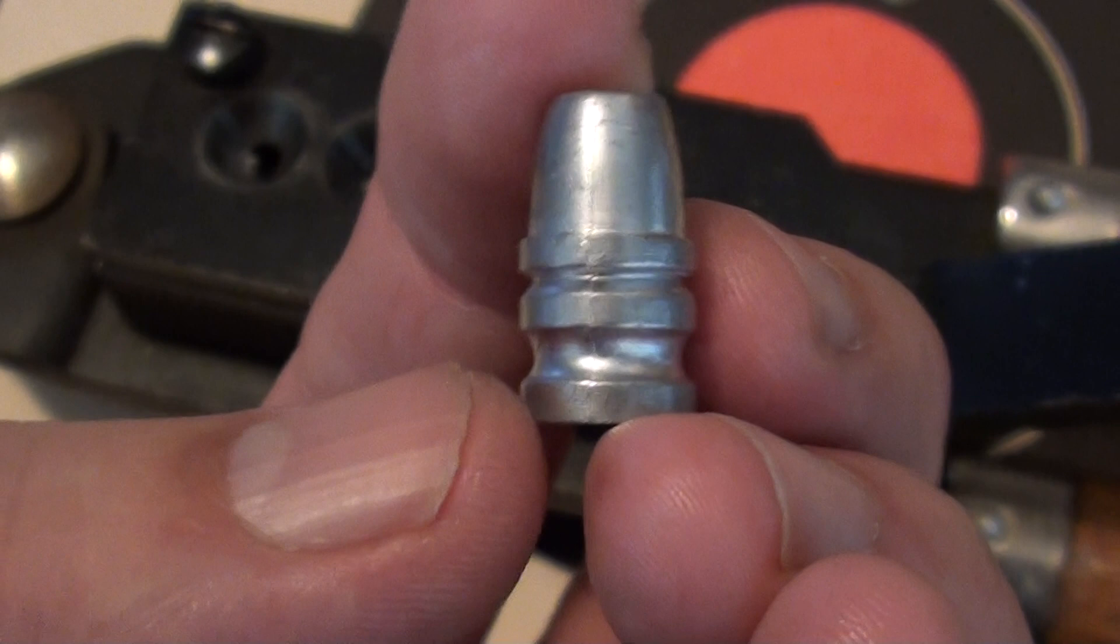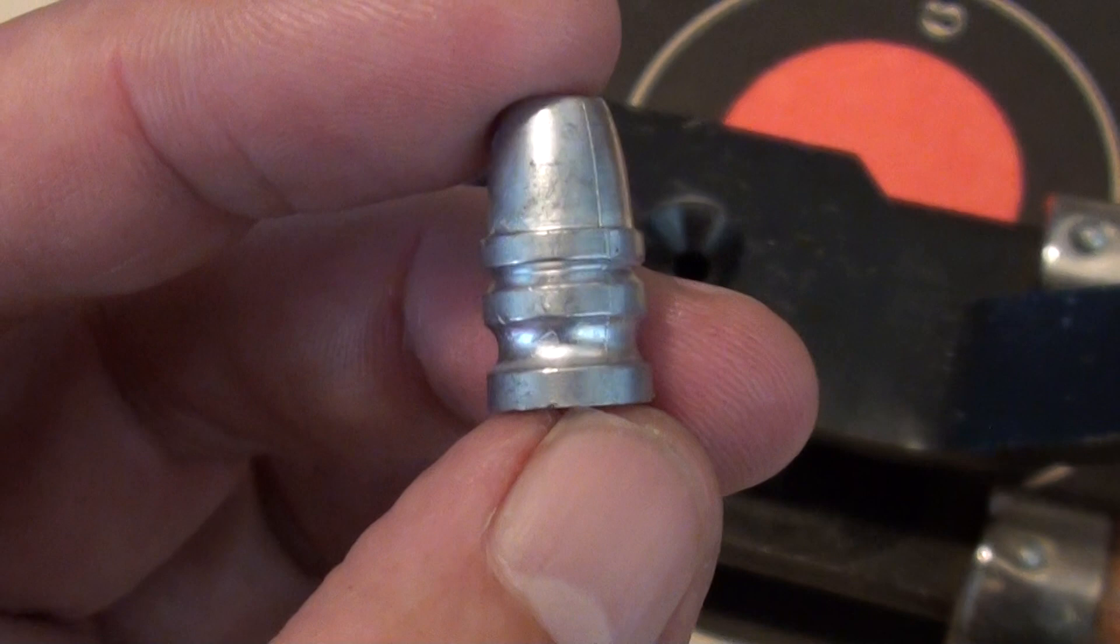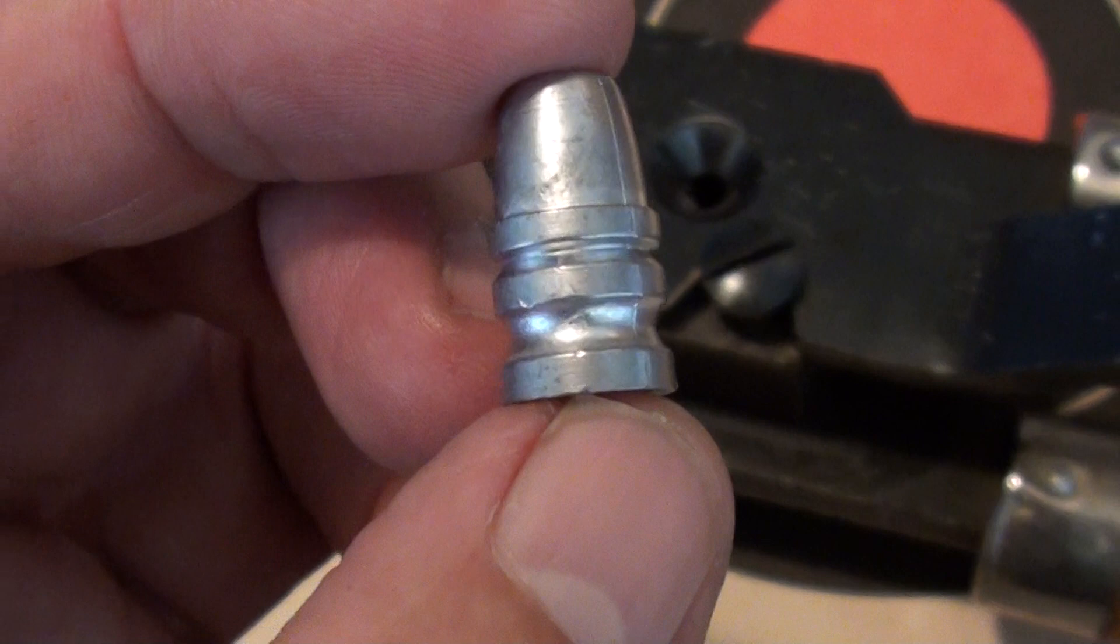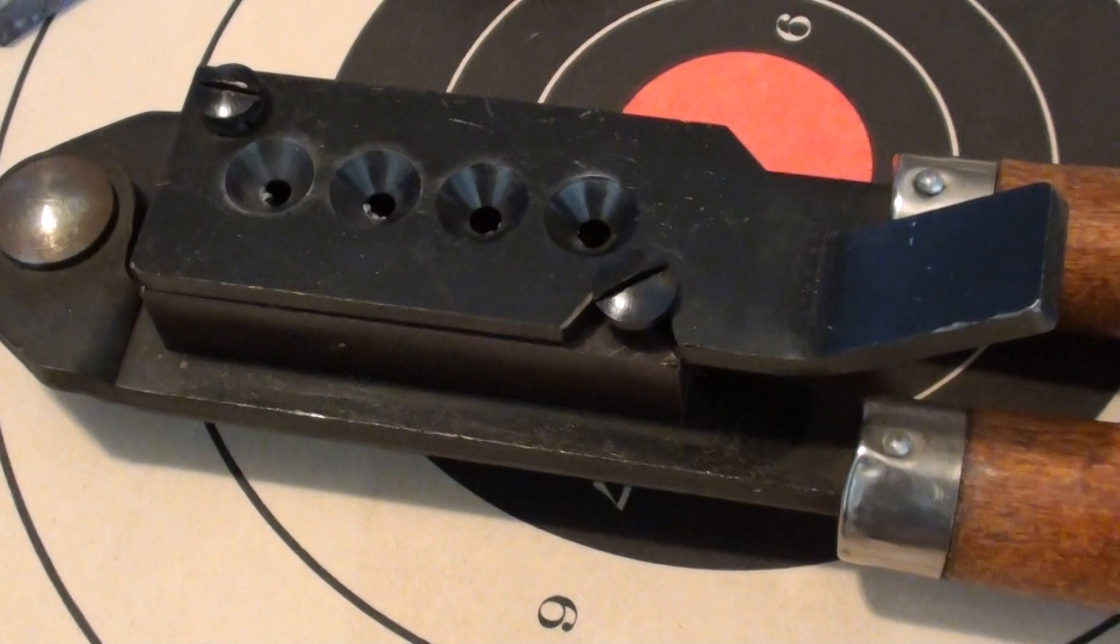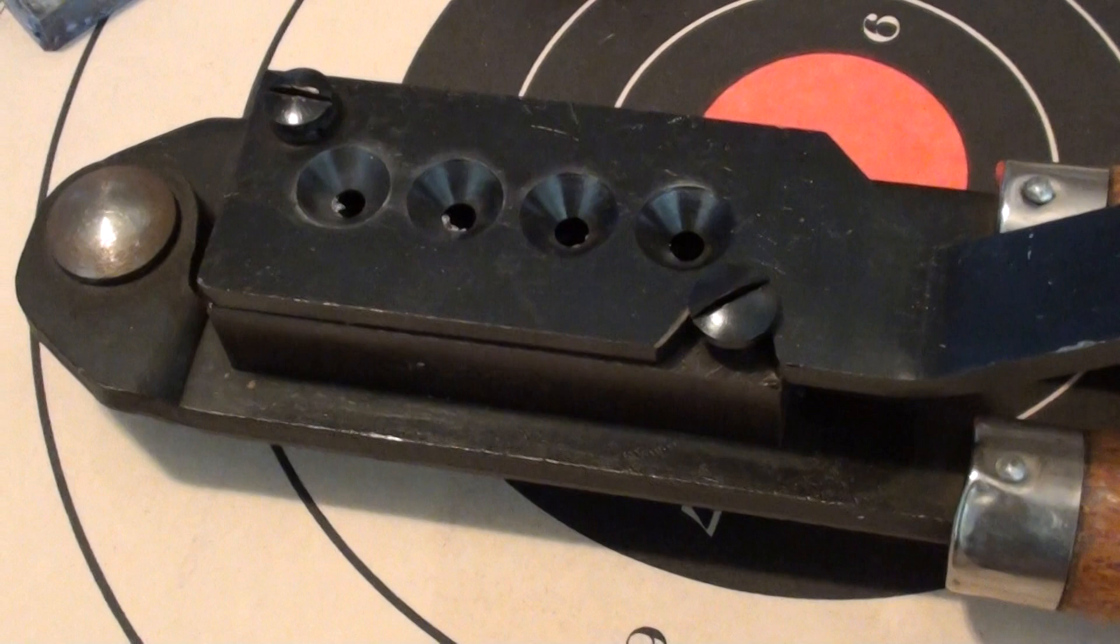Then the Keith bullet has a very generous grease groove, and Lyman produced this deep grease groove. This particular one is a round design, which is not exactly what Elmer Keith designed. He wanted a square grease groove to hold more grease, but this works very well. If you buy the current 429-421 mold, these molds for the Keith bullets are made by Lyman or Saeco or RCBS. Unfortunately, Lee does not make an authentic Keith mold.